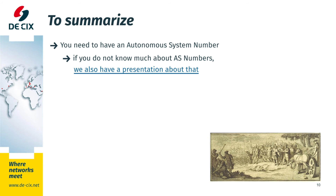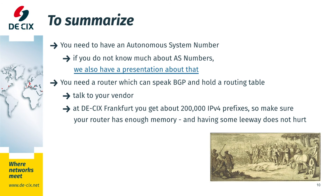To summarise, what do you need to get started with peering? You need an autonomous system number. If you do not know what that is, check out our presentation on ASNs, which is available online — just go to the DKX Academy section of the DKX website. You need to have a router which is able to speak BGP and hold a routing table. The best approach is to talk to your hardware vendor to check if the router you currently have is capable. If not, make sure that if you do purchase a new router, it has enough memory to hold the routing table.